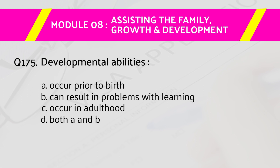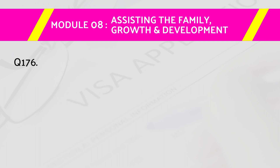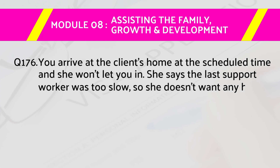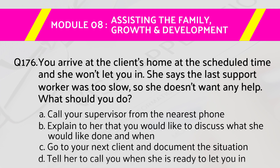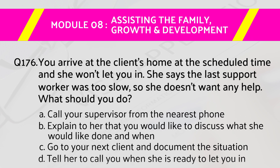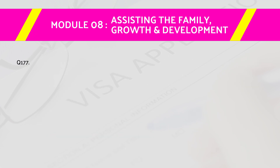The right answer is D, both A and B. Question number 176: You arrive at the client's home at the scheduled time and she won't let you in. She says the last support worker was too slow so she doesn't want any help. What should you do? Answers are: A) call your supervisor, B) explain to her that you would like to discuss what she would like done and when, C) go to your next client and document the situation, D) tell her to call you when she is ready. The right answer is B, explain to her that you would like to discuss what she would like done and when.